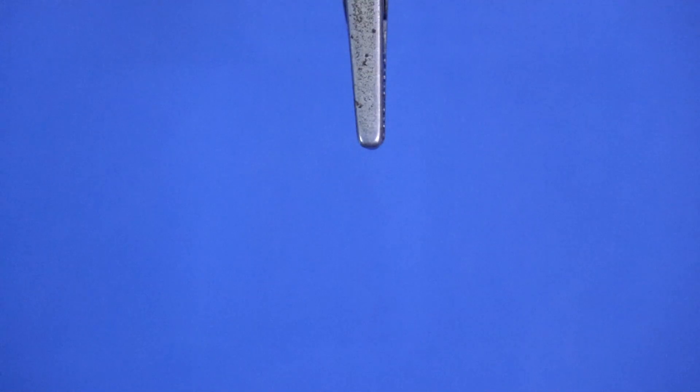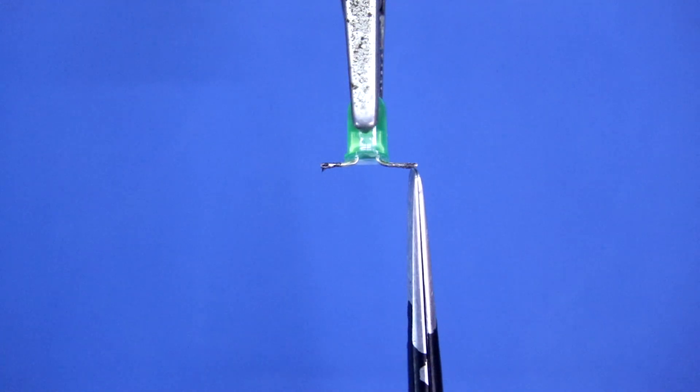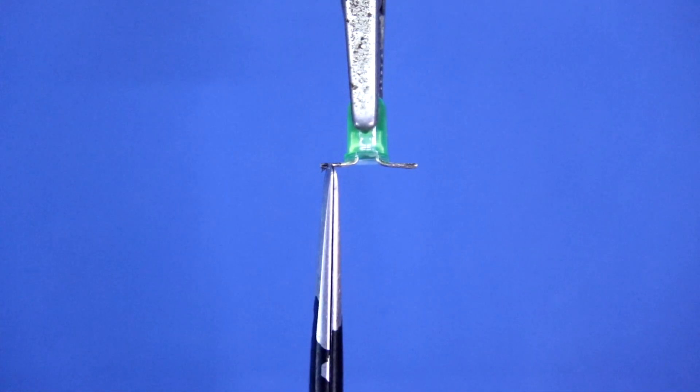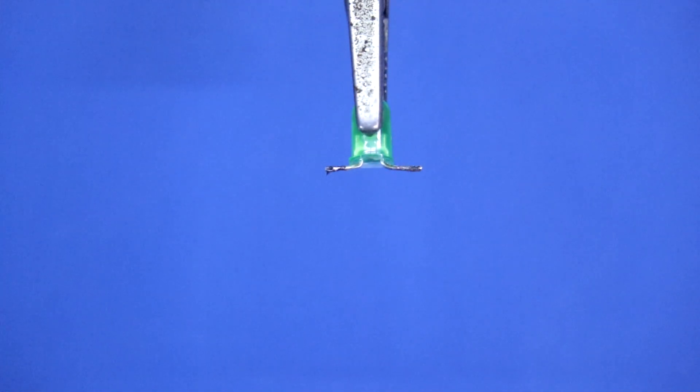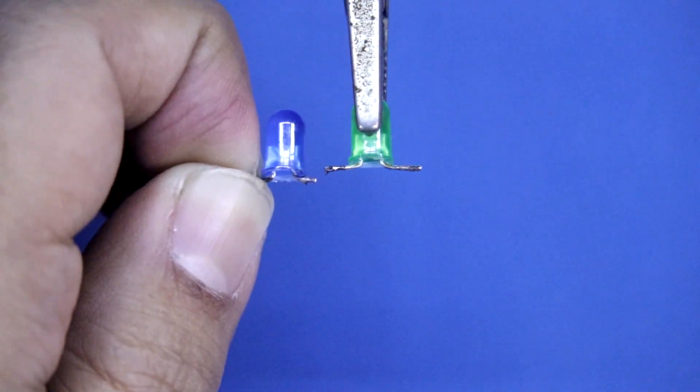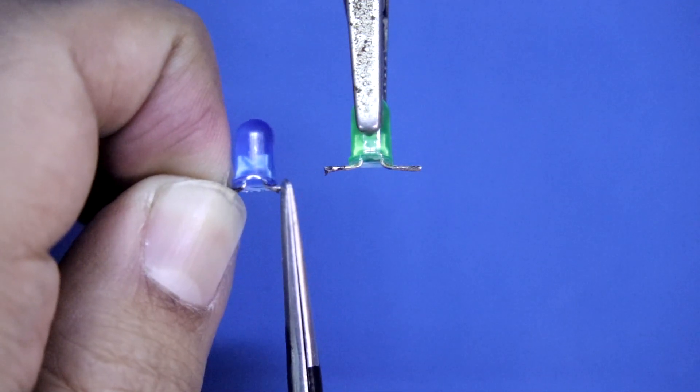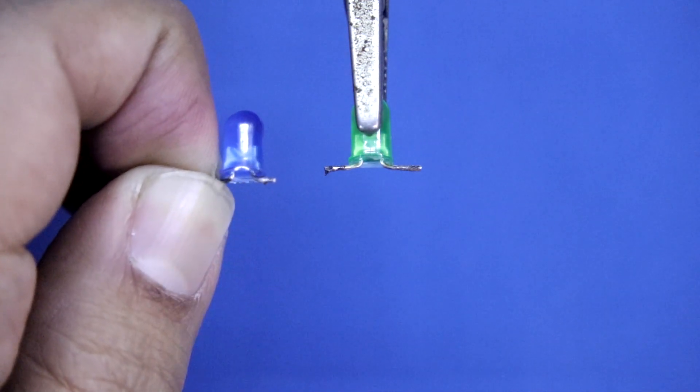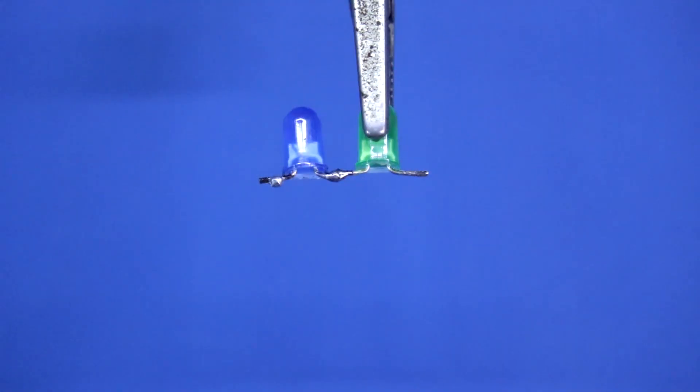Now we need LED. This side is negative and this is positive. Now I will solder another LED with this pin, the blue LED. This side is negative and this side is positive. Now white LED.